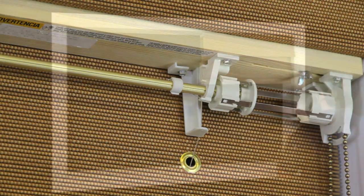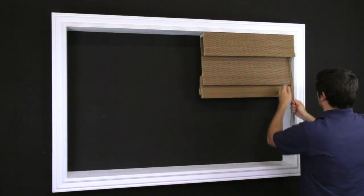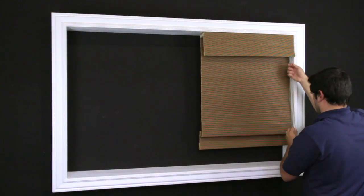If moving the retainer clip is not enough to make the shade even, remove the retainer clip and retie the knot.